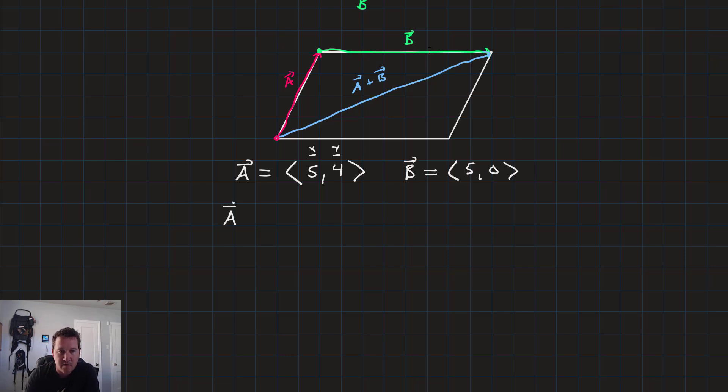If we write vector a plus vector b, we'll have these two vectors, 5 and 4 plus a vector with 5 and 0. And the horizontal terms add and the vertical terms add. We'll just add 5 plus 5 and 4 plus 0. So the result is 10 and 4. So that's how we add up vectors.